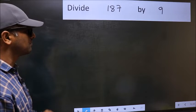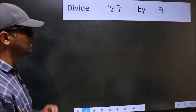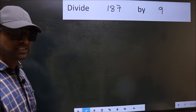Divide 187 by 9. While doing this division, many do this mistake.